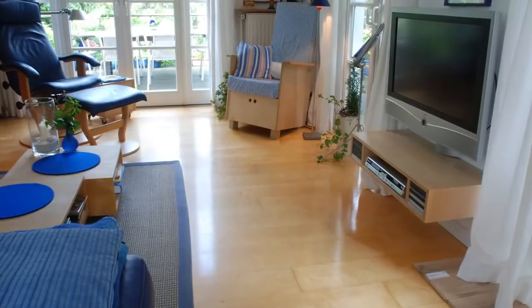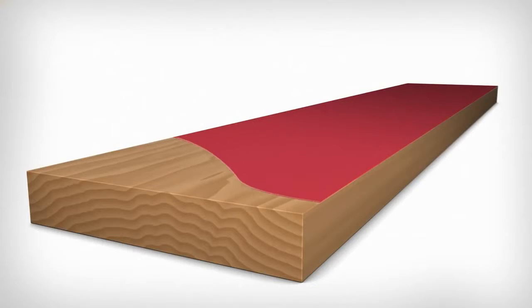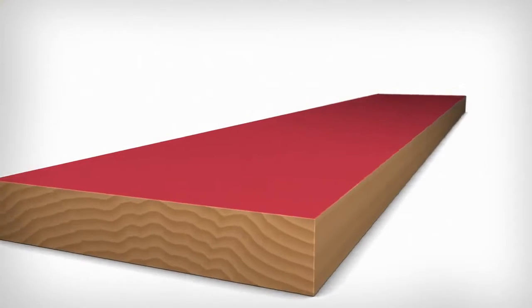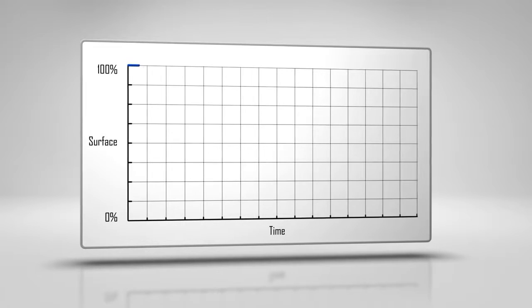Firstly, we'll take a look at a lacquered varnished floor surface. These create a hard and durable surface which is completely closed. Let's take a look at the surface quality over time. The film layer protects the floor from normal wear and tear.